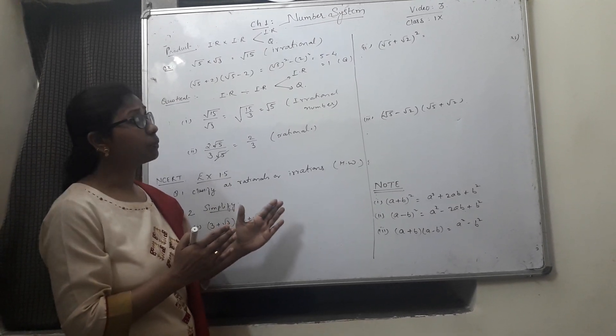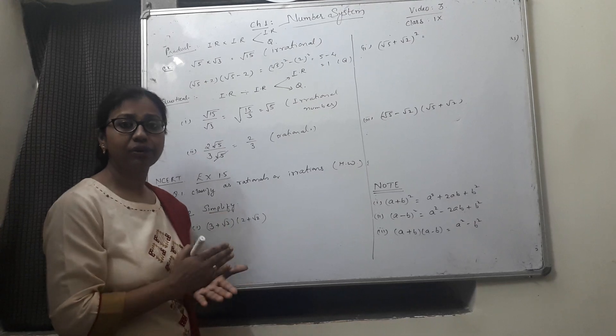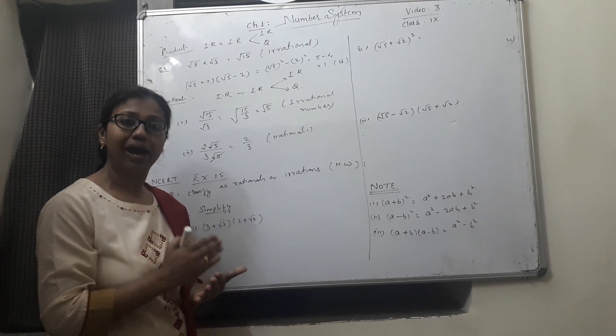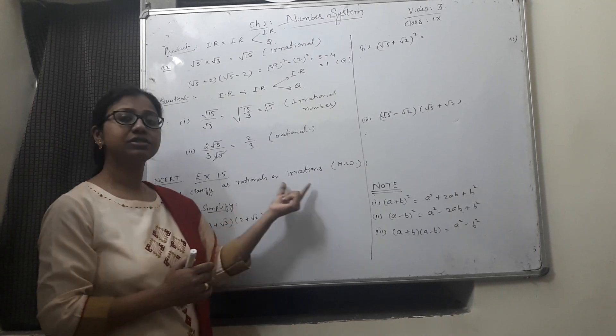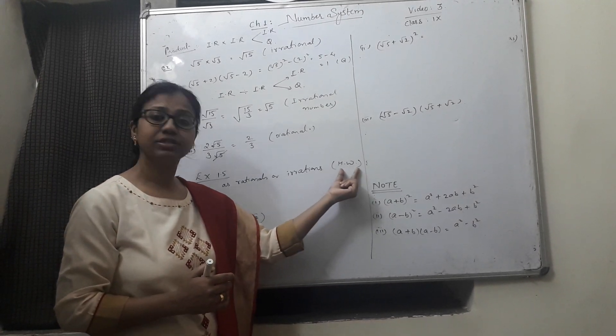In the previous video I have already given you the definitions of rational number and irrational number. You can easily classify these numbers as rationals or irrationals. So this is your homework.